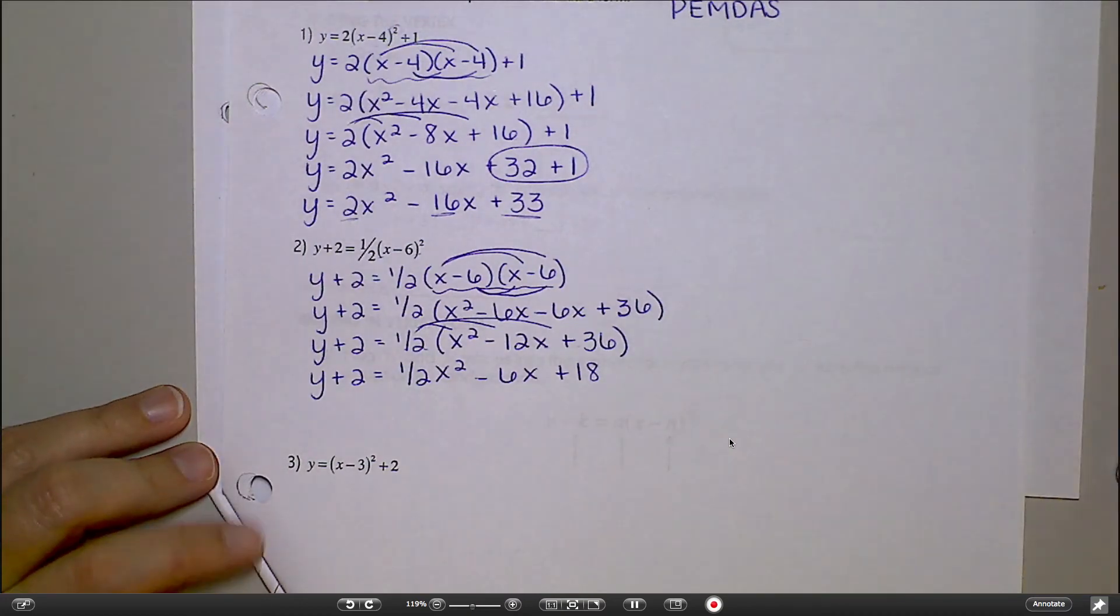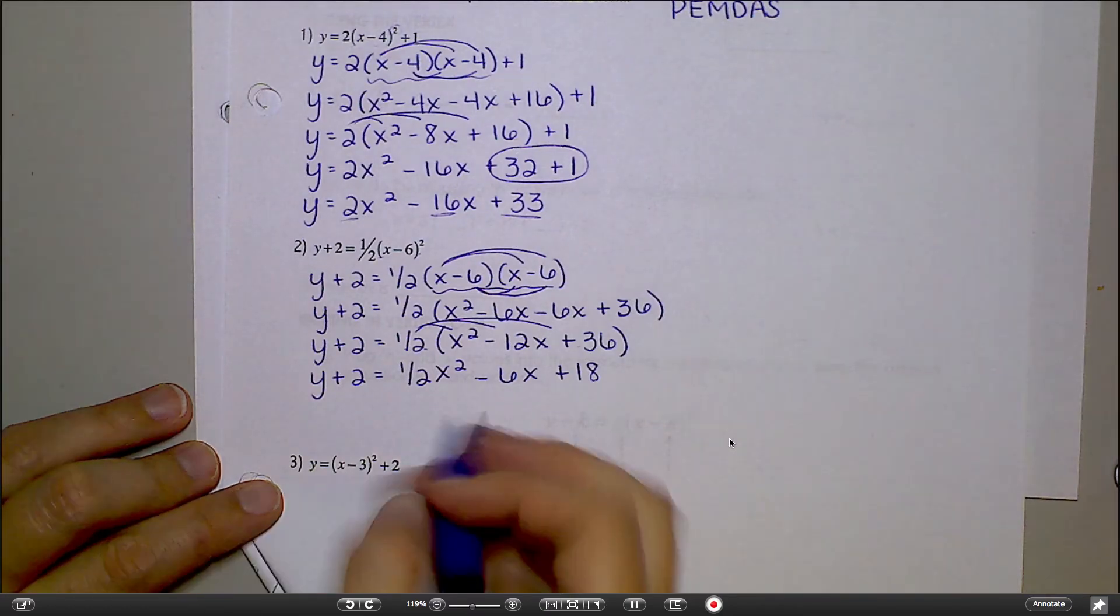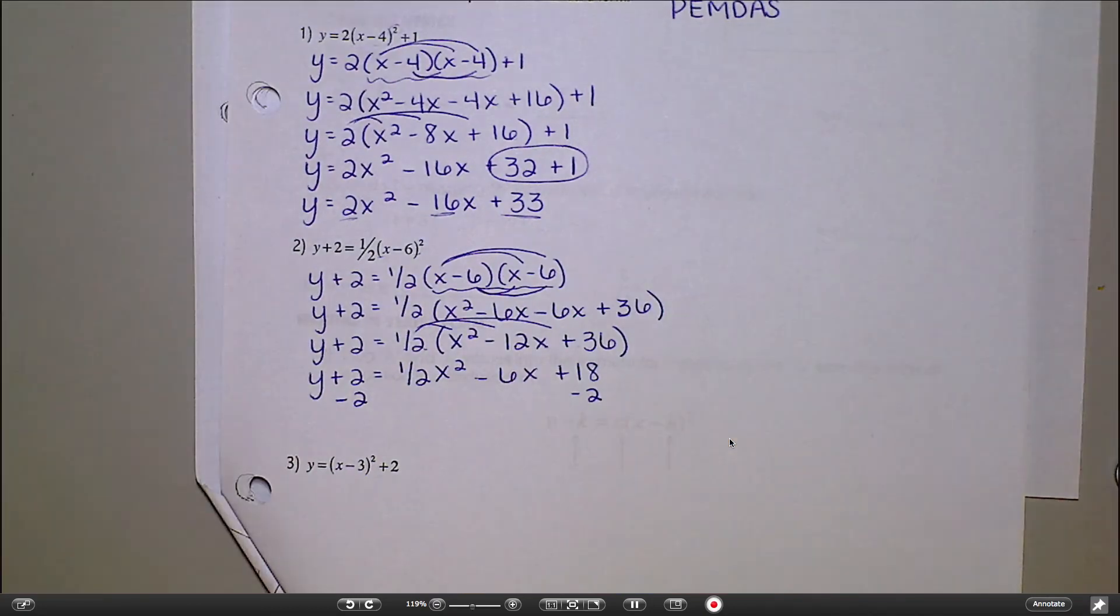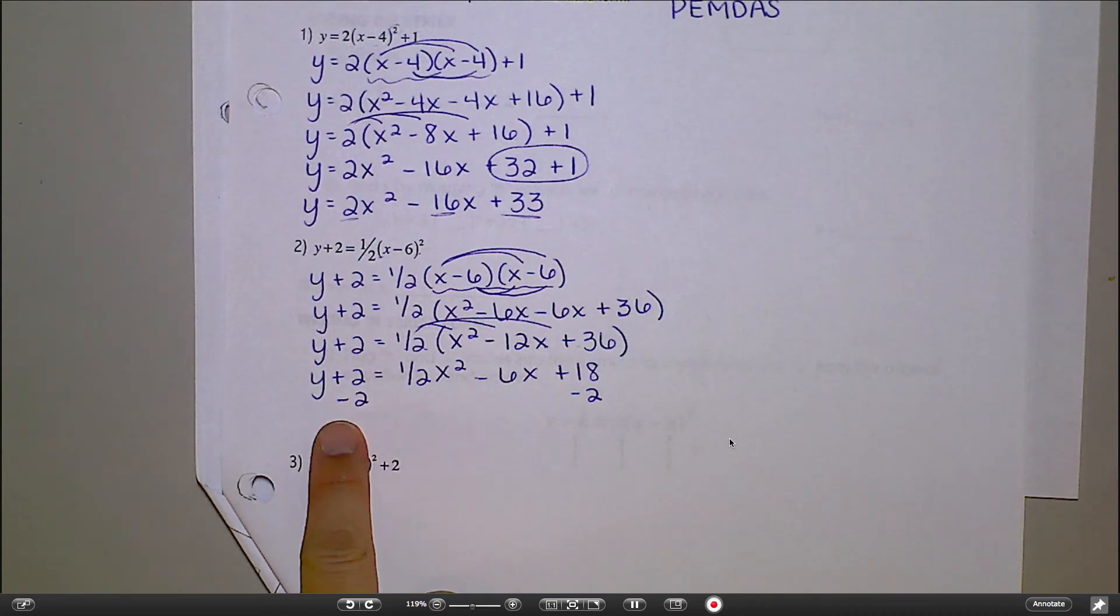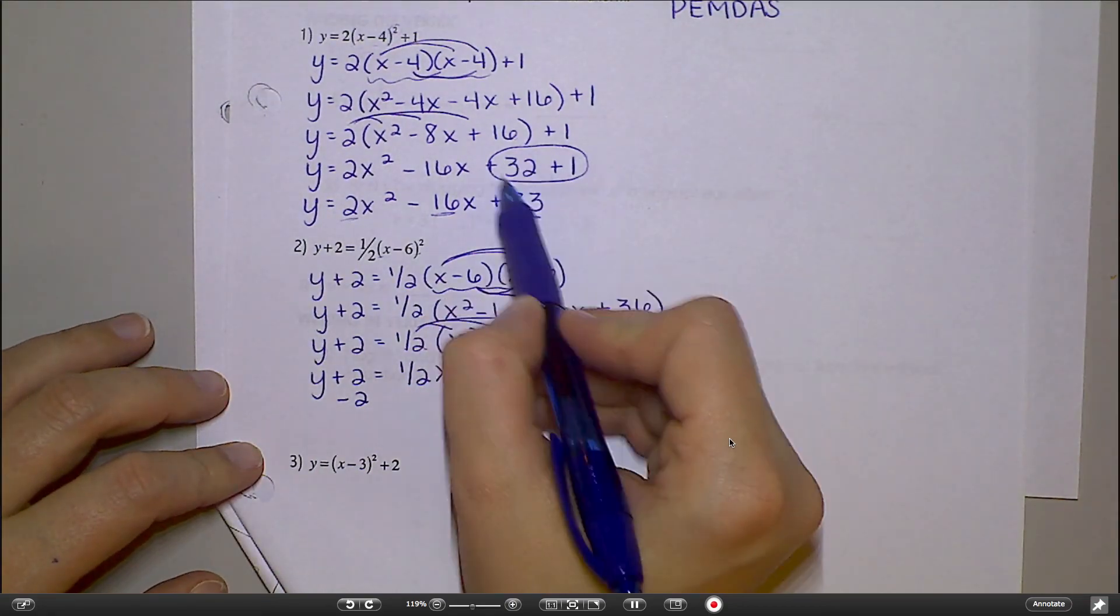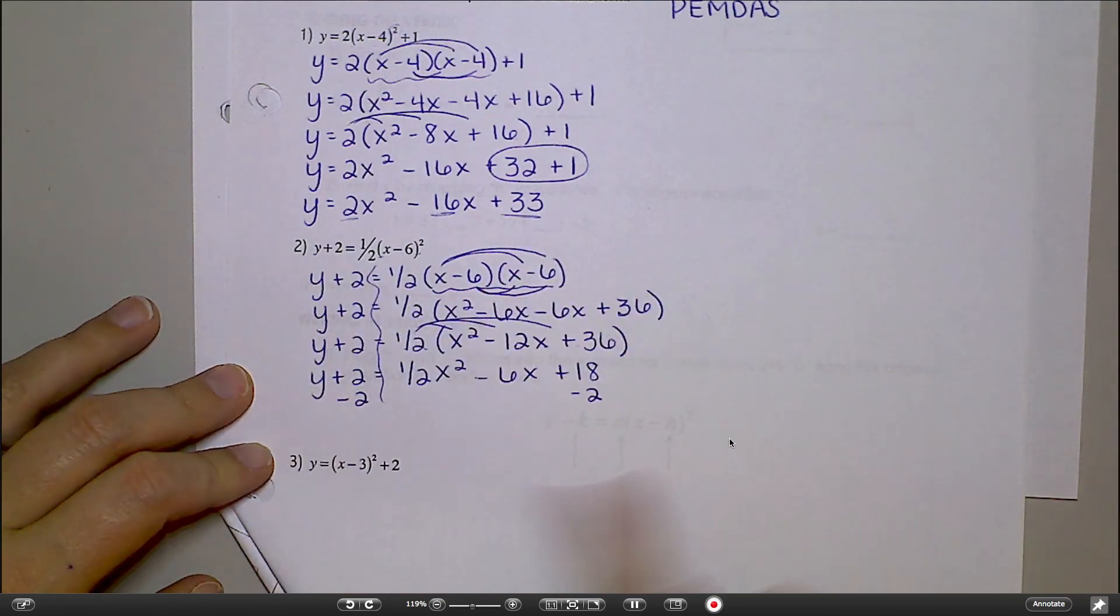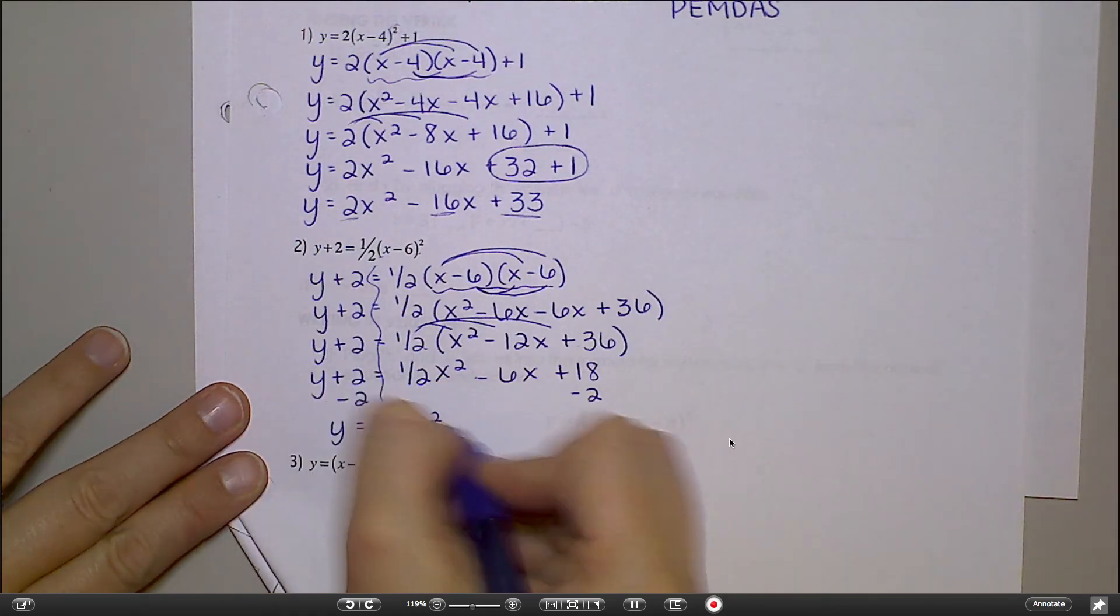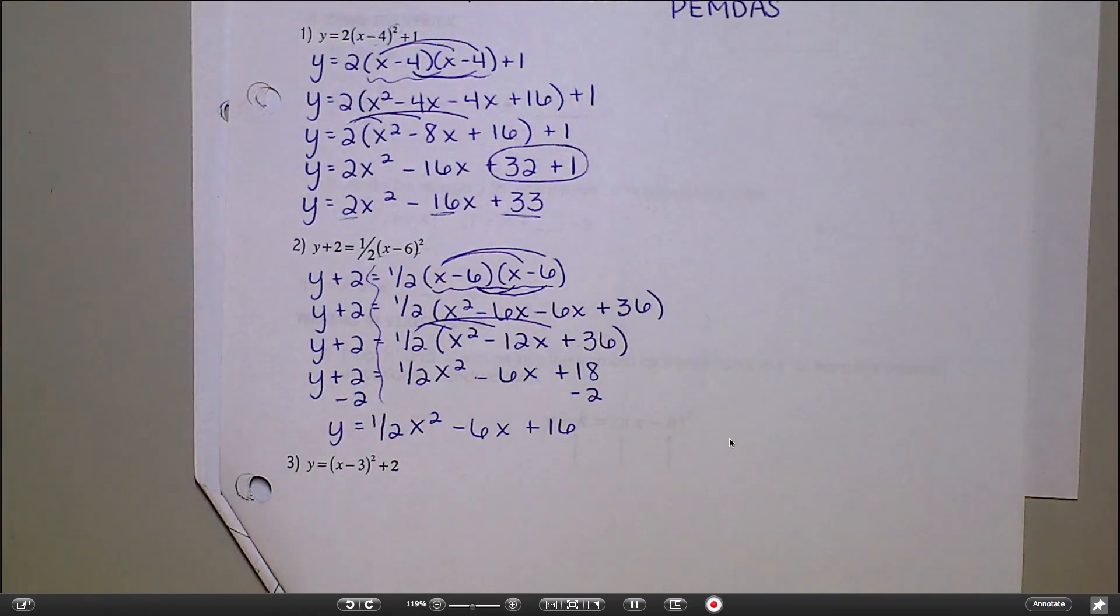What's the last thing I still have to do? I need to get y by itself. This time though that 2 is on the other side of the equals sign. So I'm going to have to subtract it to move it to the other side. In this one, the 32 and the 1 were just right next to each other on the same side. Here they're separated by the equals sign. So I'm subtracting the 2 to move it. And I would end up with y equals 1 half x squared minus 6x plus 16. Final answer.